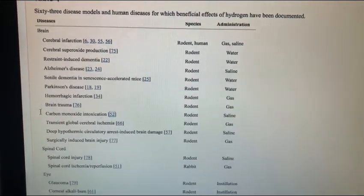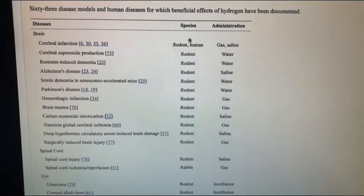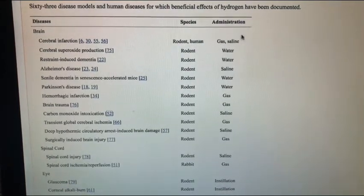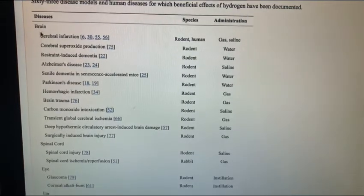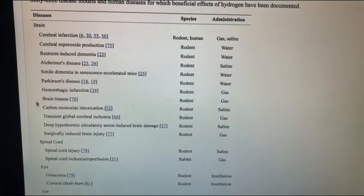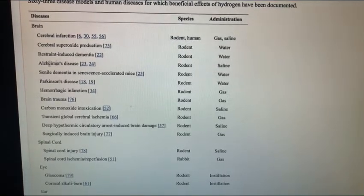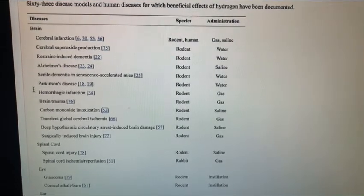So what we're going to see here is the diseases listed, and then the species on which the test was done, like a human in this case, and then also animals like rodents, and then administration, how exactly they were doing it. First things first, you see the section for brain. This is all for the brain. And what you're going to see here right now is things like dementia, Alzheimer's, Parkinson's, even brain trauma or brain injury of some sort.